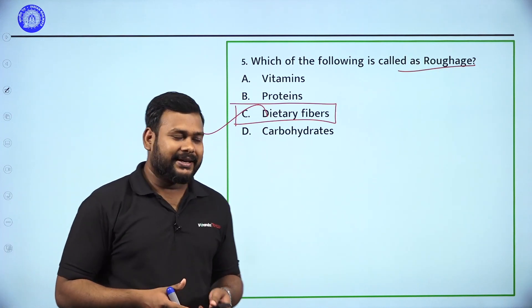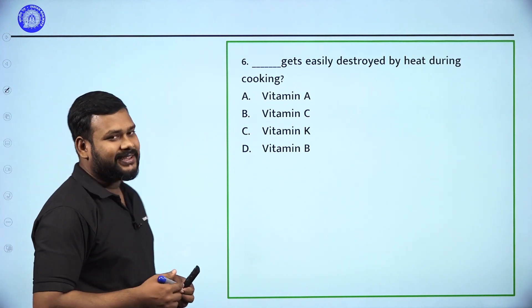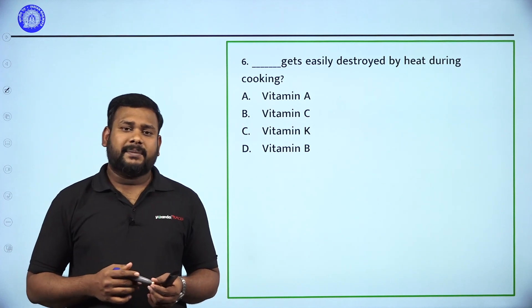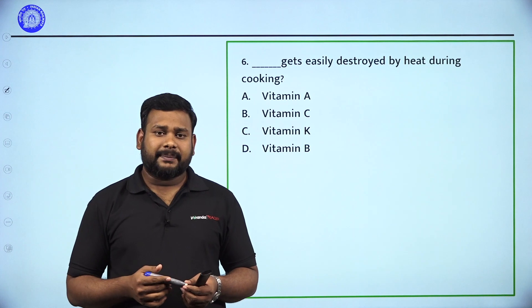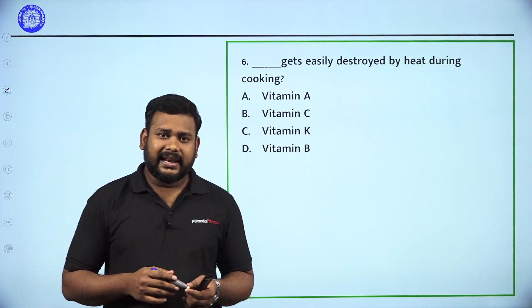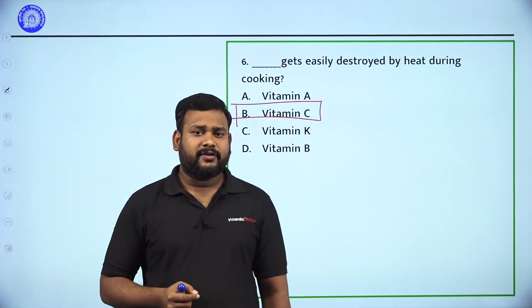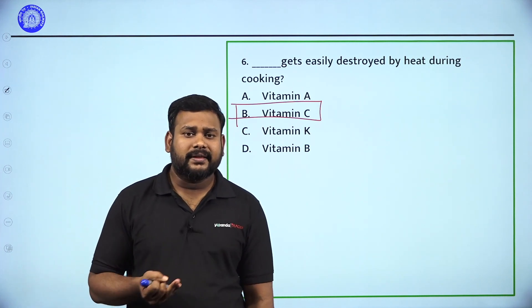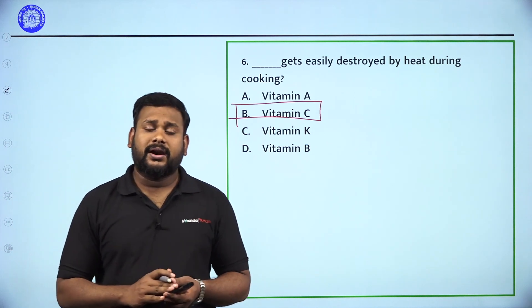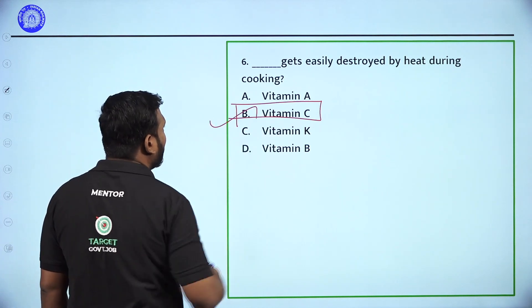Next question: Dash gets easily destroyed by heating during cooking. Options: Vitamin A, Vitamin C, Vitamin K, Vitamin B. This is a very interesting question. If we cook food, Vitamin C gets destroyed. For example, in lemons and oranges, if you cook them, Vitamin C is easily destroyed. So Option B, Vitamin C, is the correct answer.